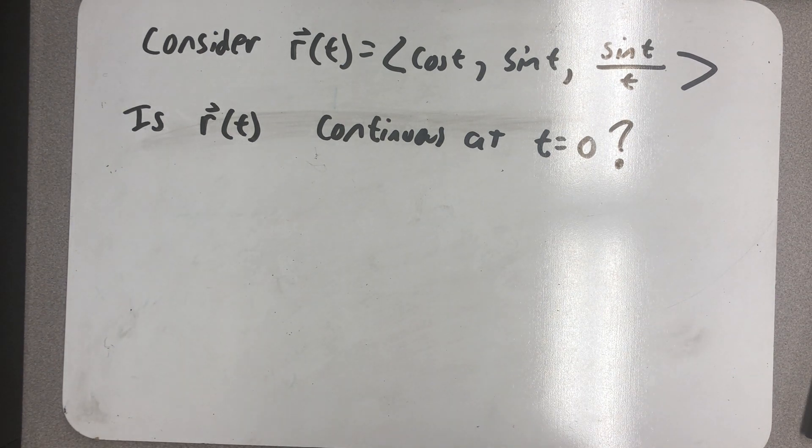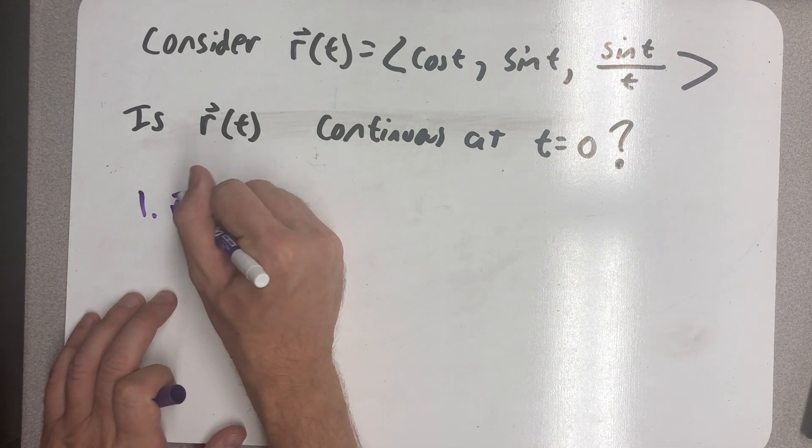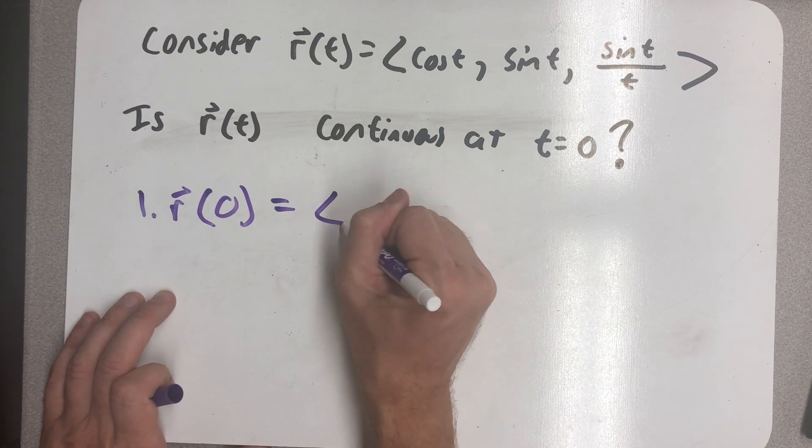Well, just thinking about the continuity test. Number one, r of t must exist, so r of zero must exist. And well, it doesn't.